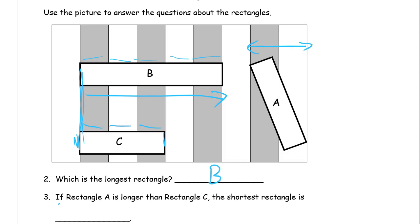And it says here if rectangle A is longer than rectangle C, the shortest rectangle is what? So if B is longer than C and A is longer than C, then everything is longer than C. So C has to be shortest. The shortest rectangle has to be C. And you can just look at it. C looks like it's the shortest one and it is.